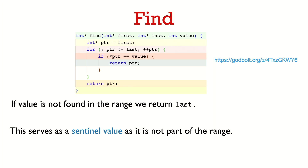Here's how we could write the find algorithm. We have a pointer variable PTR initialized to first, and a for loop that increments the pointer until it reaches last. At each step, we dereference the pointer and check if the value equals what we're searching for — if so, we return the pointer. Otherwise, when the loop ends, we return last as a sentinel value indicating the value was not found in the range.